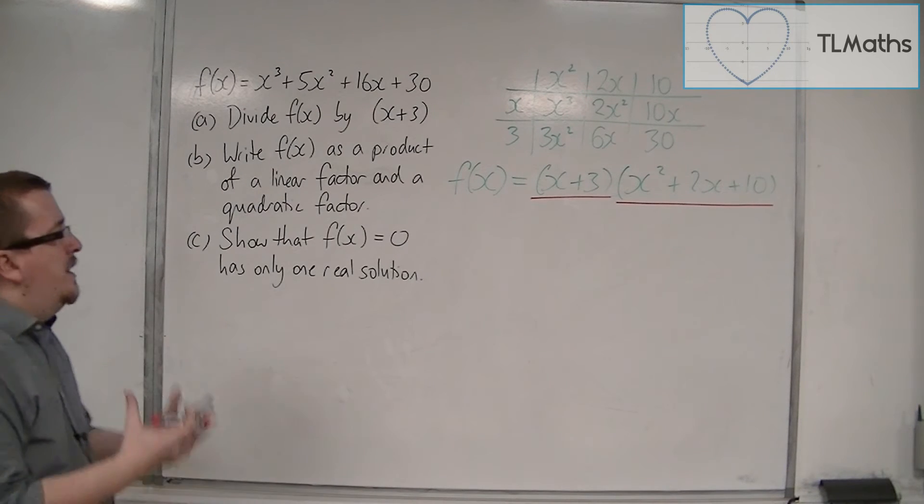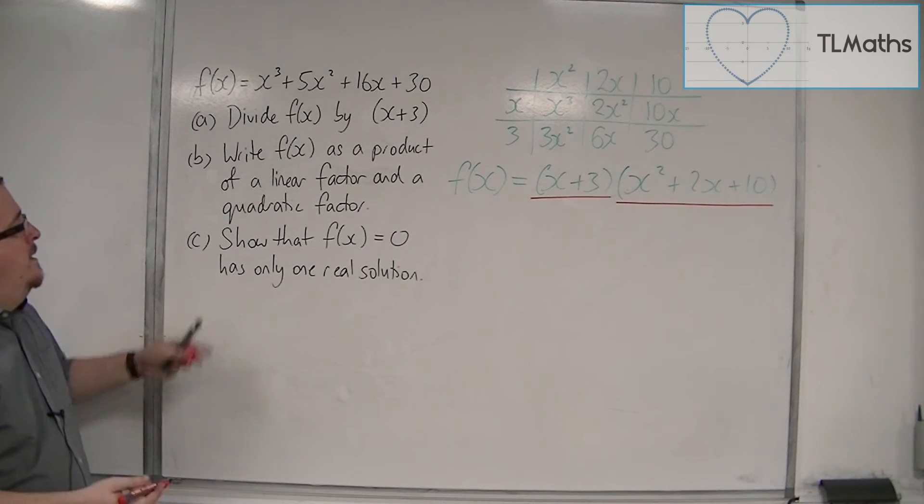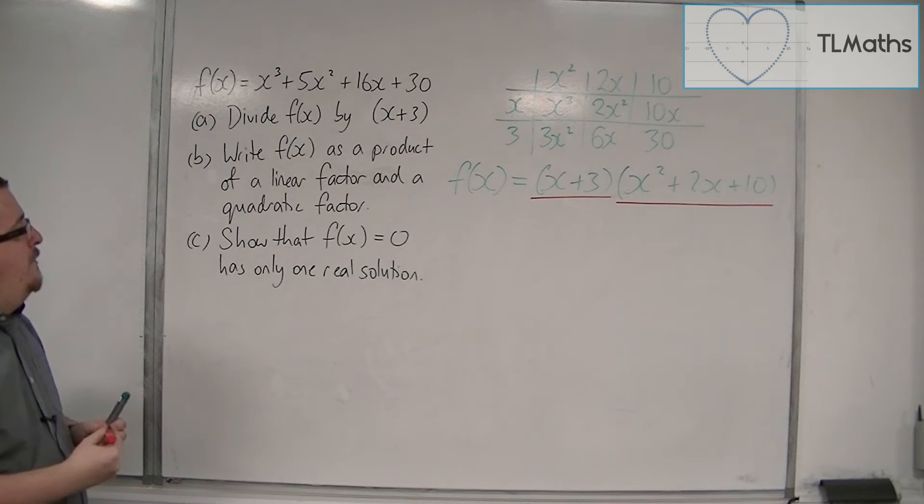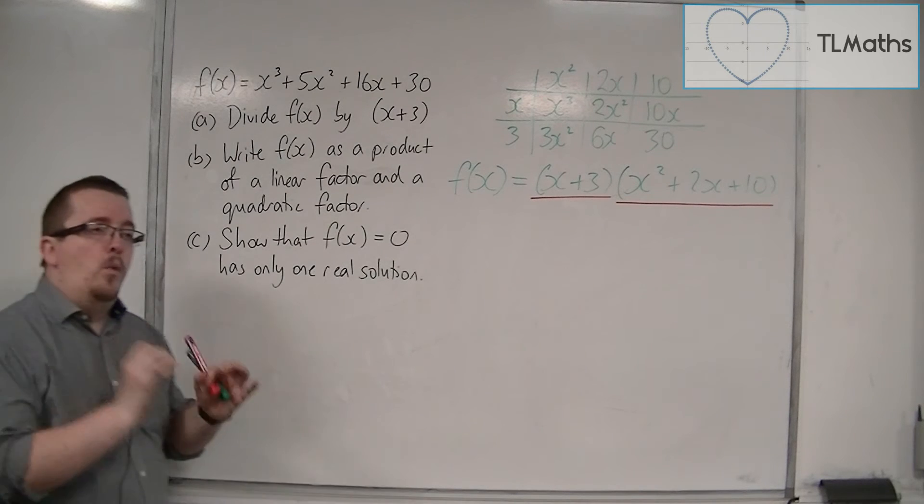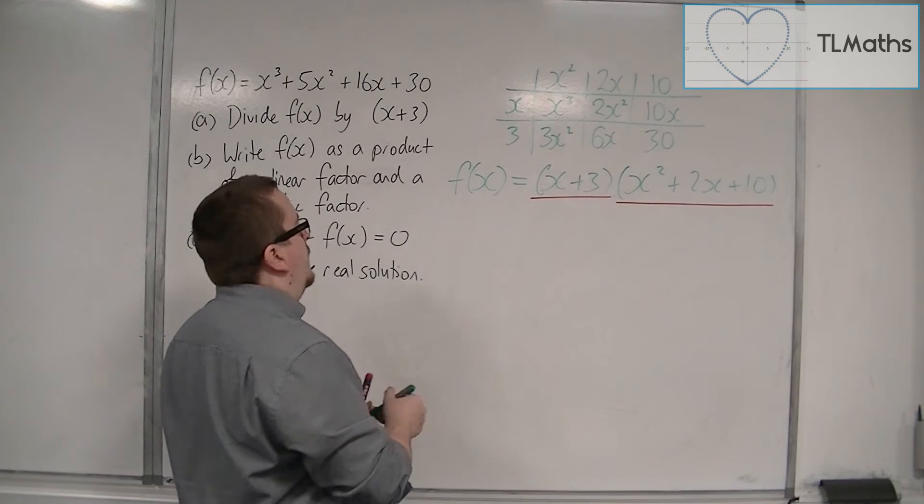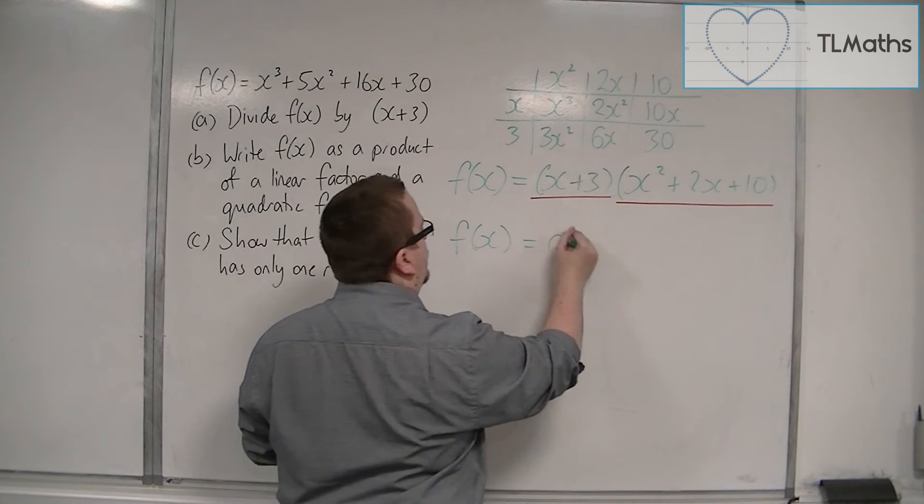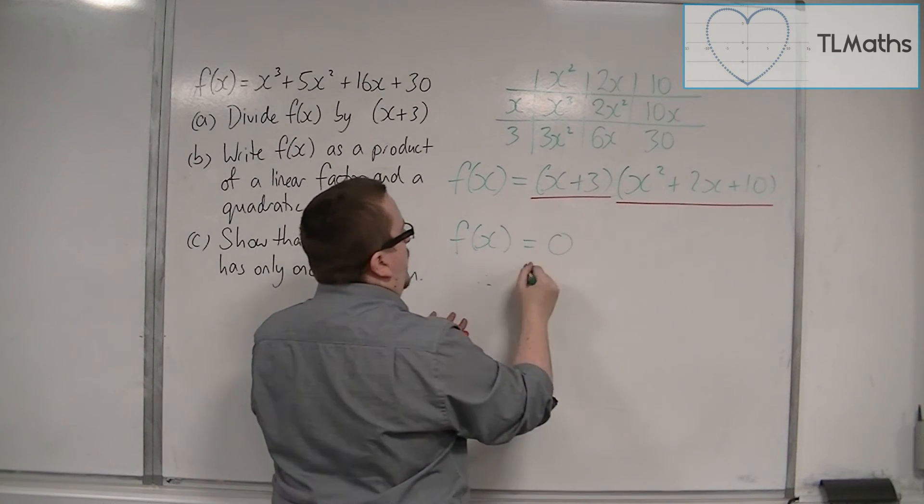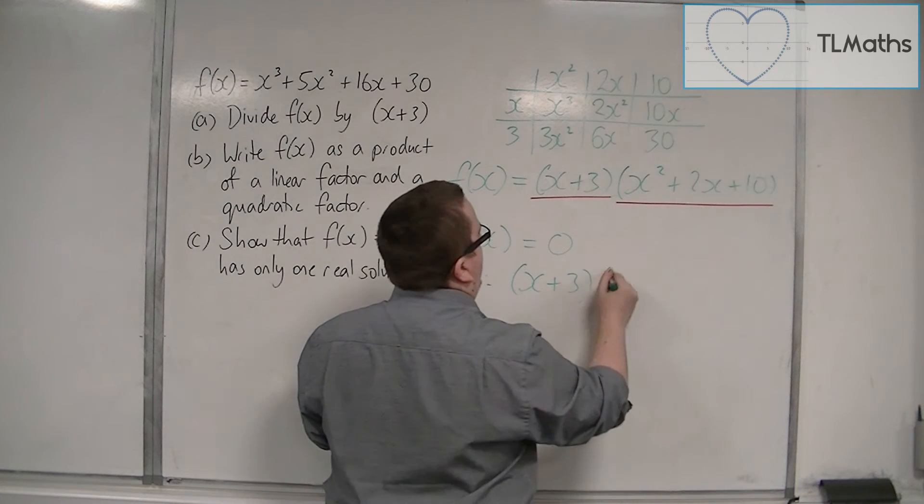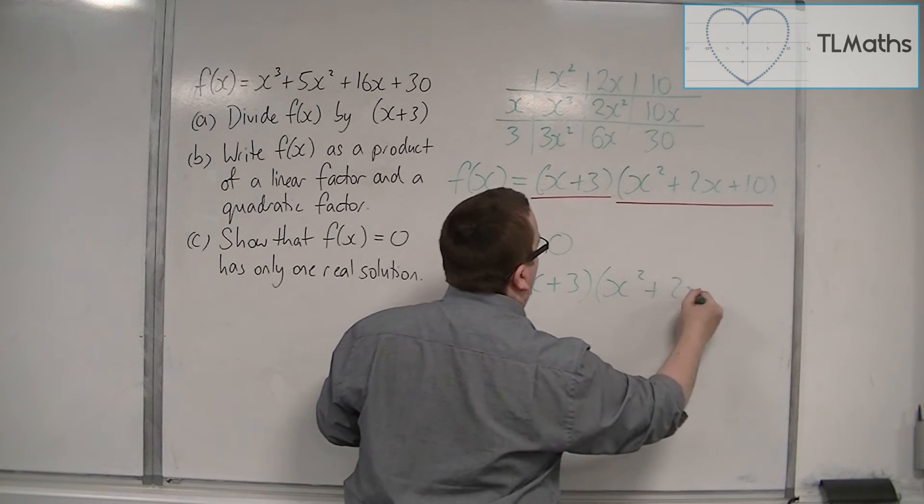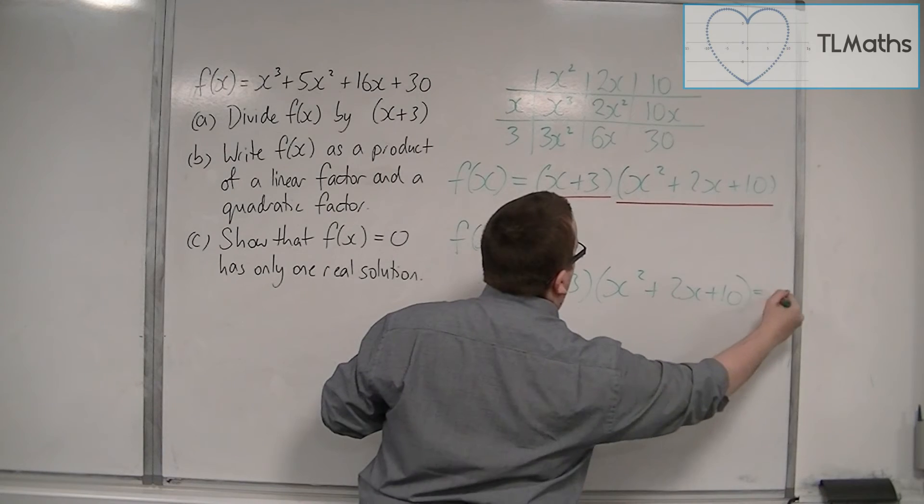It's really about getting to know the language. Part C: show that f(x)=0 has only one real solution. So if f(x)=0, then (x+3)(x²+2x+10) must equal 0.